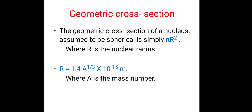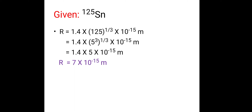When we want to calculate the geometric cross-section, we first have to calculate the value of r, that is the nuclear radius. In this example, the value of A is 125, so we can calculate r. R is equal to 1.4 × 125^(1/3) × 10⁻¹⁵ meters.